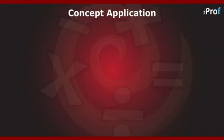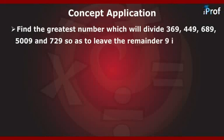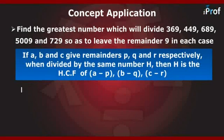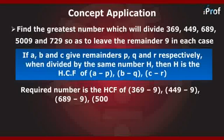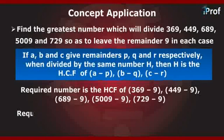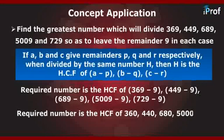We will now apply the concept we have learnt. Find the greatest number which will divide 369, 449, 689, 5009, and 729 so as to leave the remainder 9 in each case. The required number is the HCF of (369−9), (449−9), (689−9), (5009−9), and (729−9). Further reducing, we get the required number to be the HCF of 360, 440, 680, 5000, and 720. Therefore, the required number is 40.